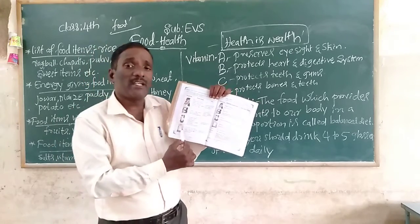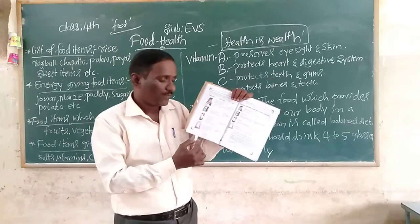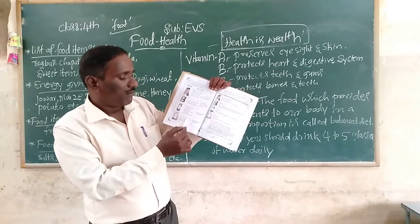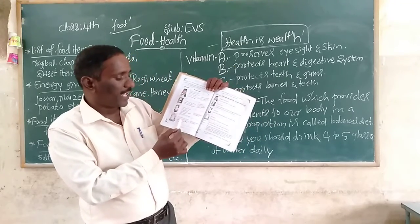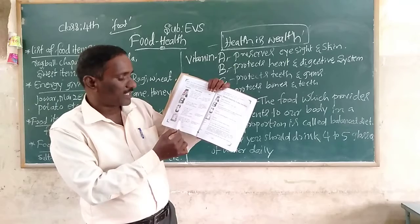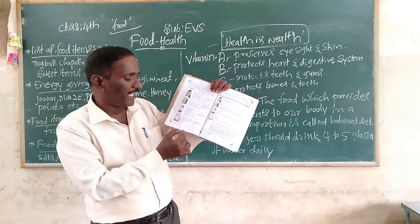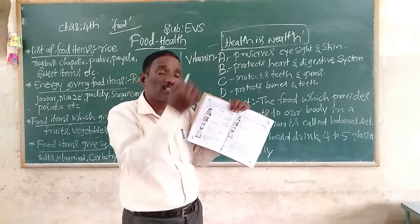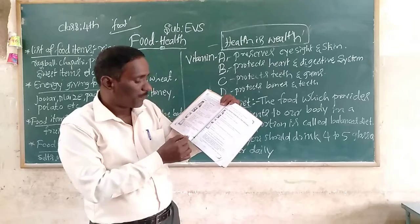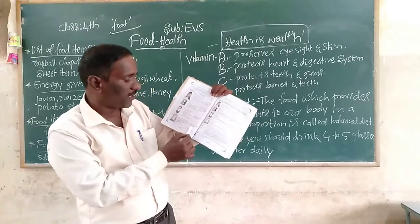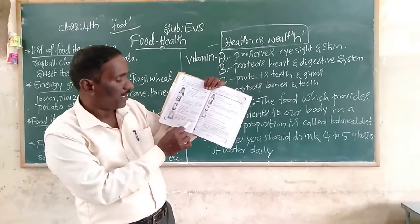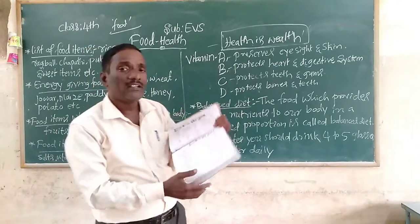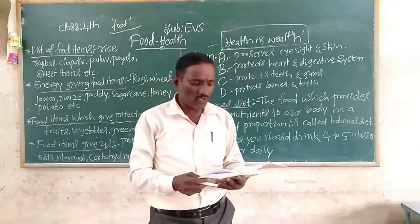Vitamin D is found in cod liver oil. When sunlight falls on the skin, Vitamin D is produced. Sunlight is the source of Vitamin D. Uses of Vitamin D: protects bones and teeth.